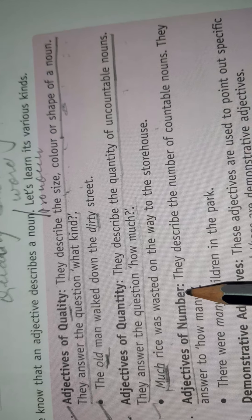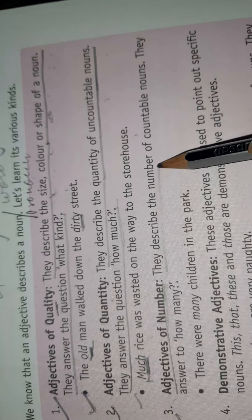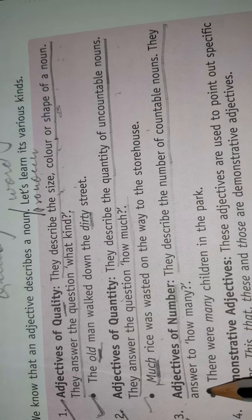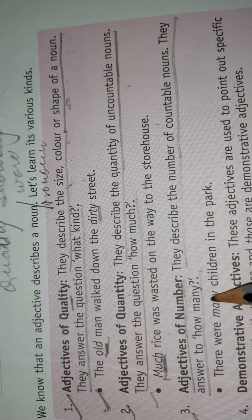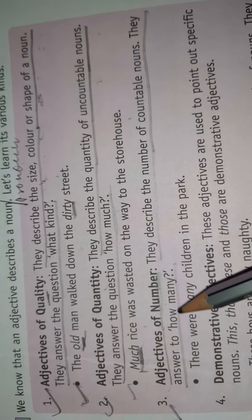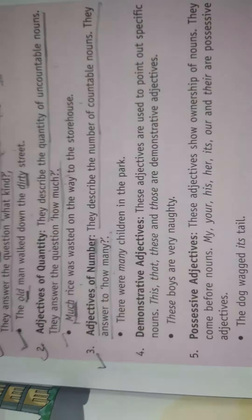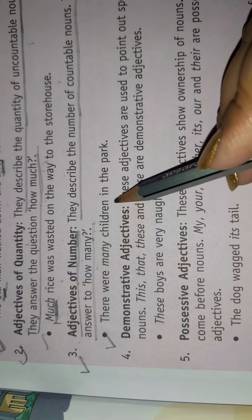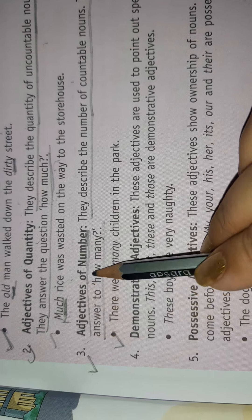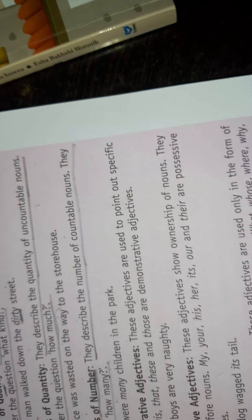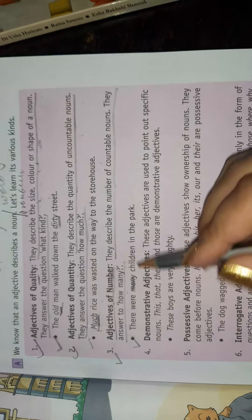Number three: Adjectives of Number. They describe the number of countable nouns and answer the question 'how many.' Remember: 'how many' for countable, 'how much' for uncountable. For example: 'There were many children in the park,' or 'There are seven children in the park.' Here, 'many' or 'seven' is an Adjective of Number.